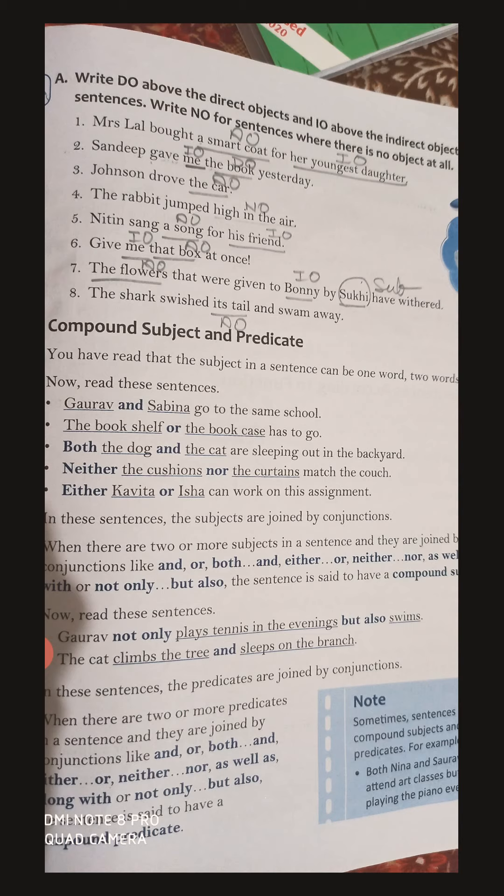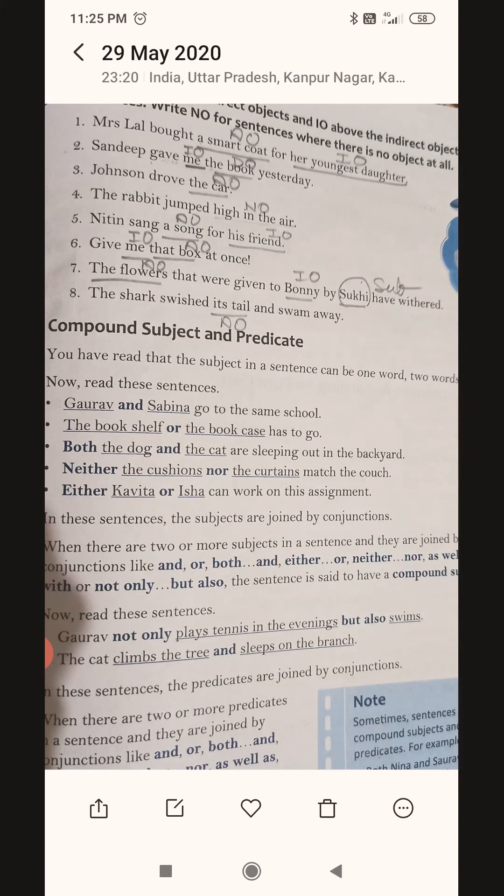Today I will be sharing the answers only. In sentence three, there is only one object and it is 'the car'. The relation of 'car' is given by answering 'what was driven', so that's why 'the car' is the direct object. In sentence four, 'the rabbit jumped high in the air' — in this sentence there is no object.